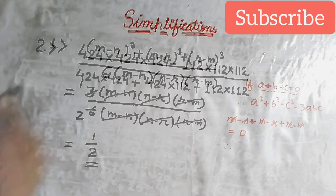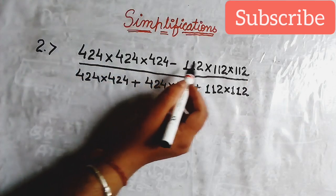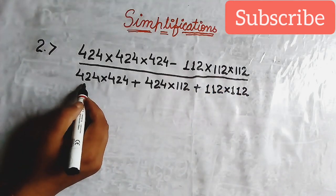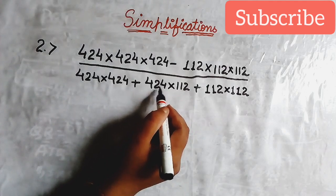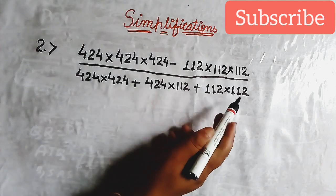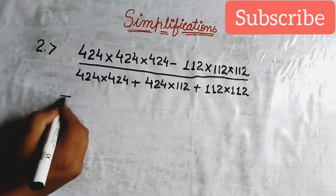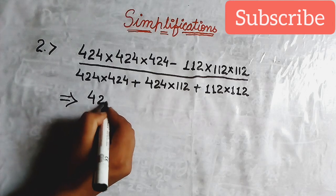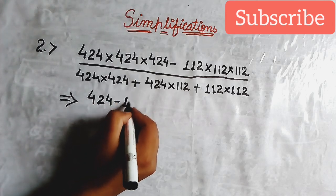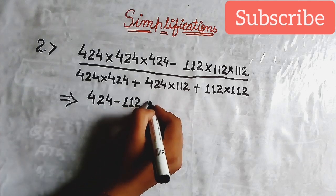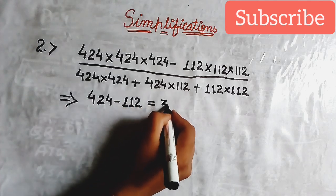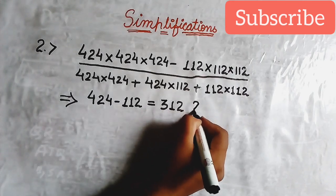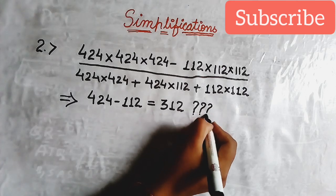Now let us see one more such question: 424 cubed minus 112 cubed, all divided by (424 squared plus 424 into 112 plus 112 squared) minus 112, which equals 312. But how will this be the solution? Let us see the explanation.